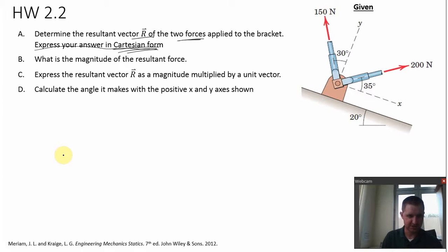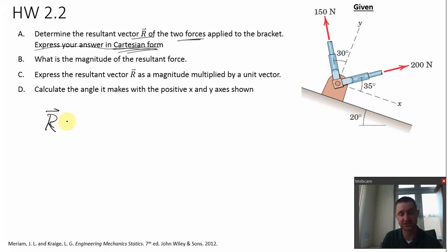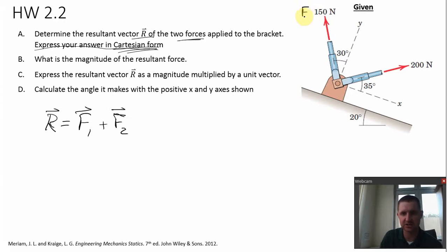So we'll sketch — I'll just use this picture here, it'll save me some time. Remember, when we're adding vectors, the analytical approach is to simply add the vectors. To do that, we want to divide each vector into component form. I'll set F1 and F2 — let's label these. Let's say this is F1 and this one is F2.